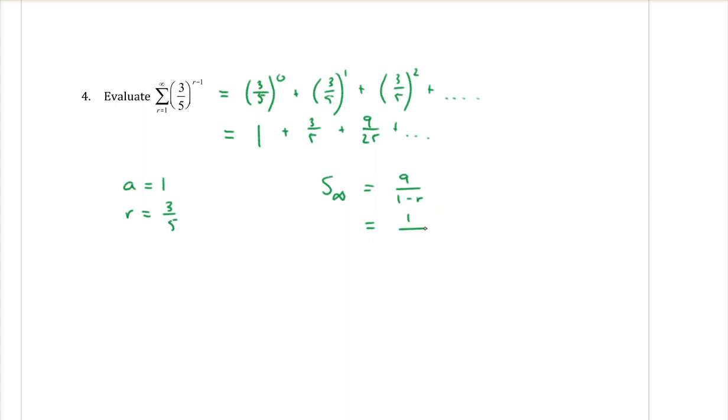So I can find my limiting sum. A is one, one minus three fifths. And that's all equal to two and a half. Okay, so that's it.